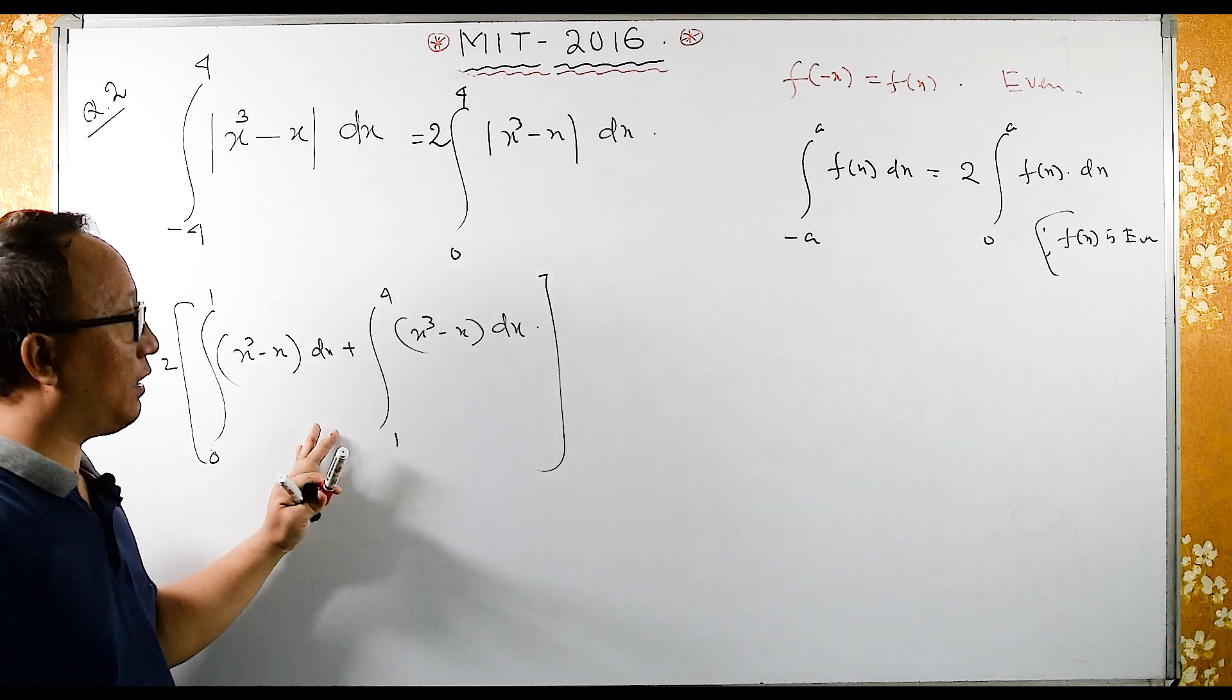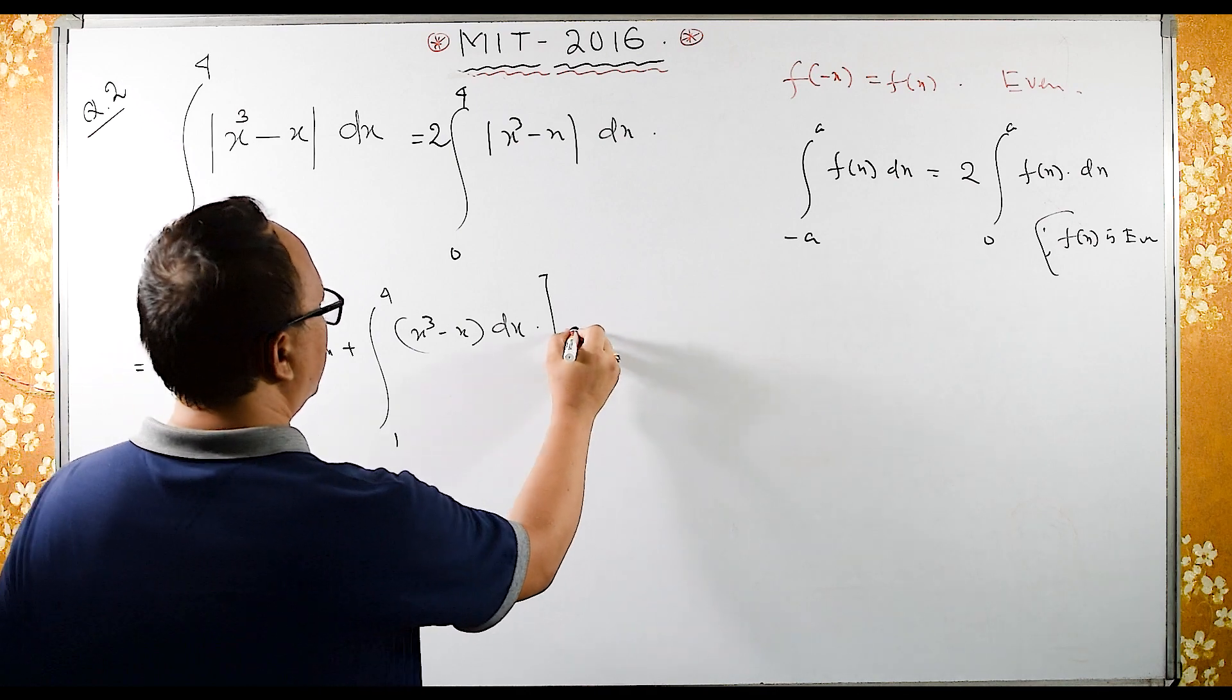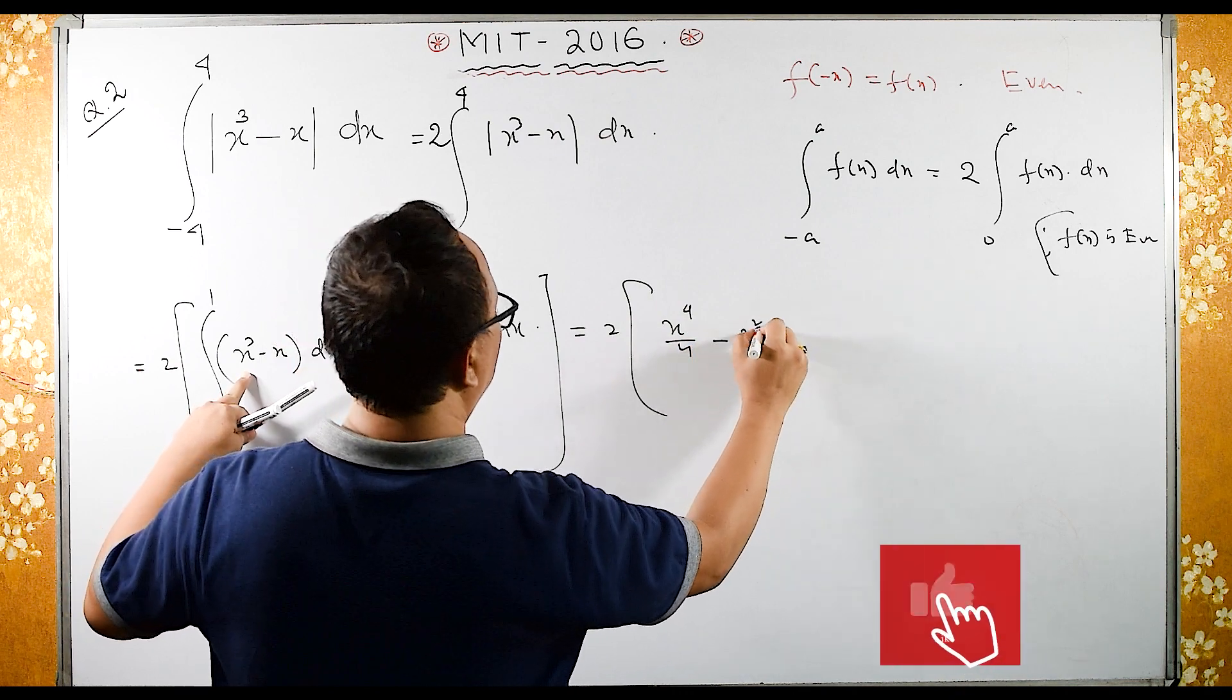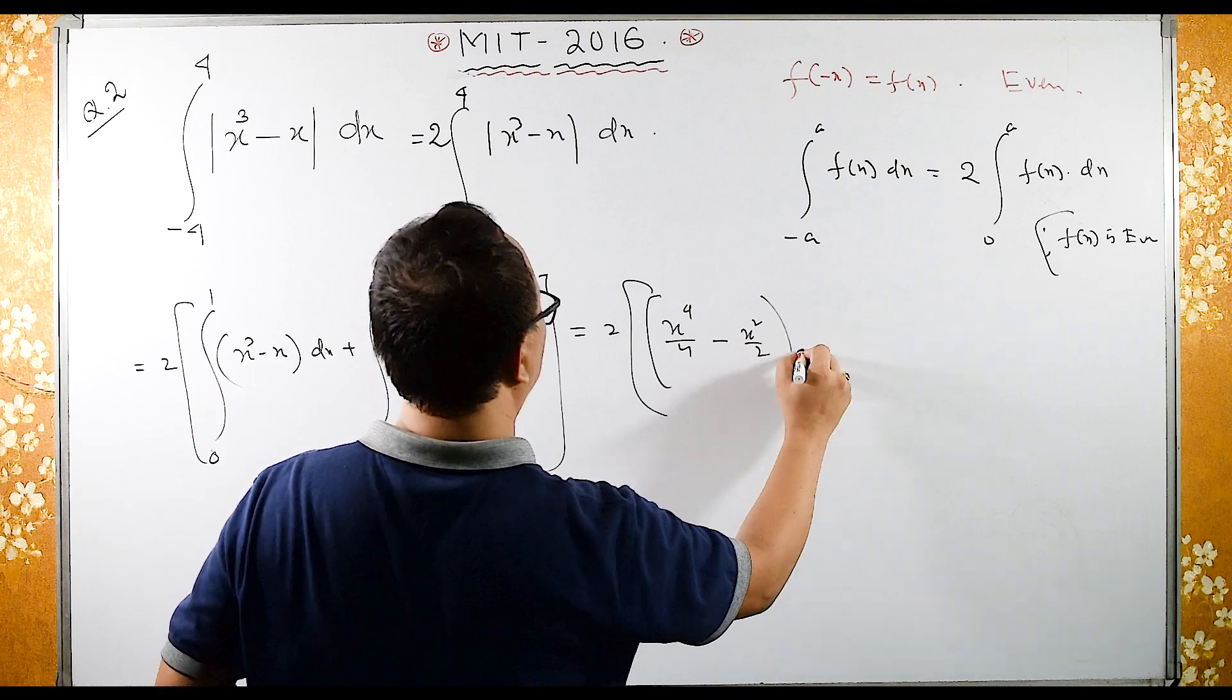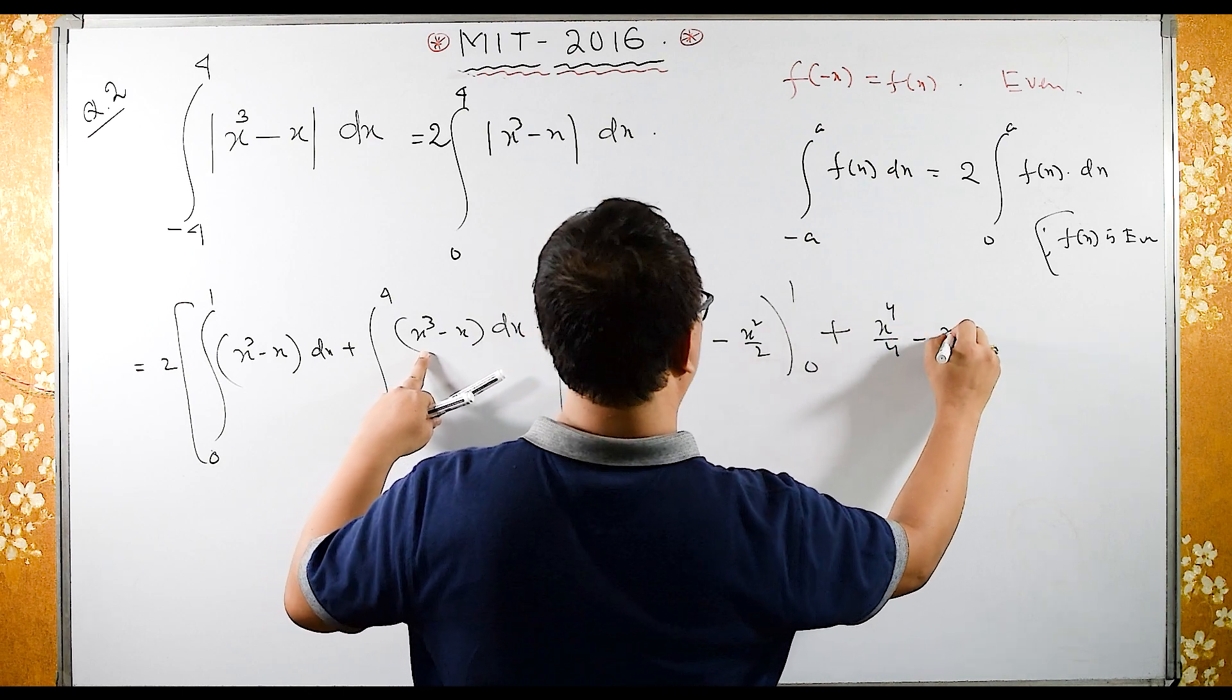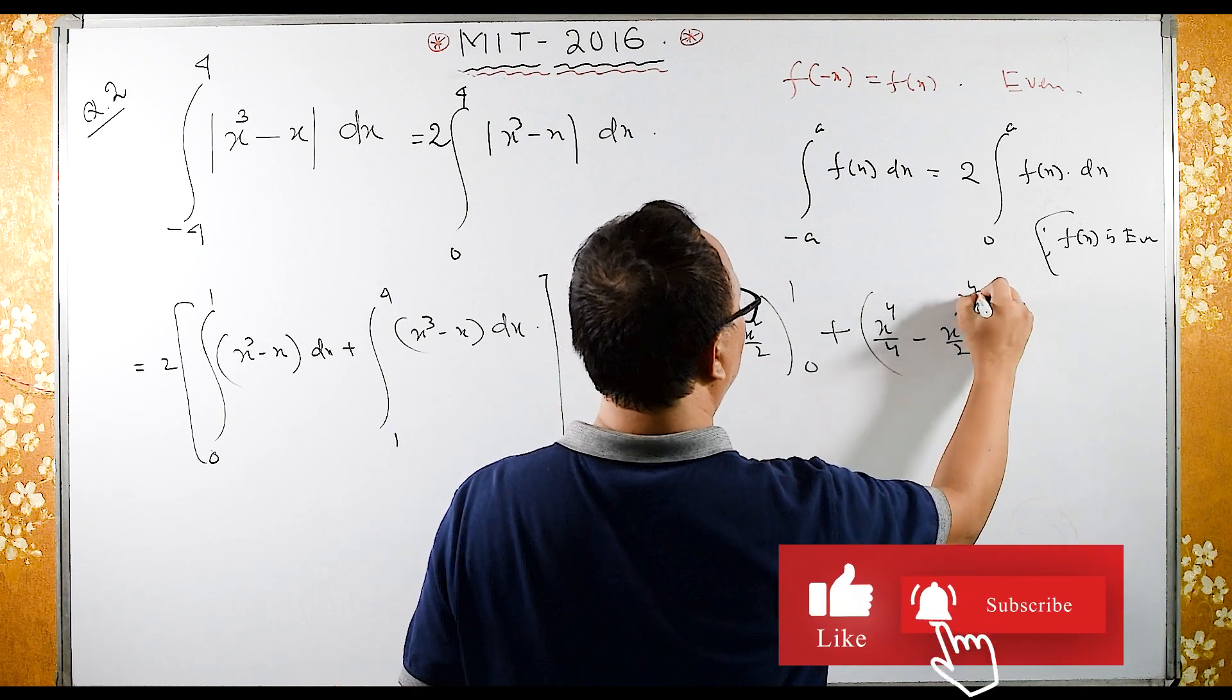So now this is very simple one. Just integrate and substitute upper limit minus lower limit. This is equal to twice integration of this is x cube is x4 upon 4 minus x square upon 2, limit is from 0 to 1, plus integration is x4 upon 4 minus x square upon 2, and here 1 to 4.